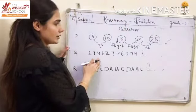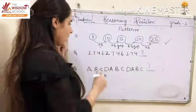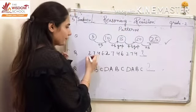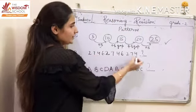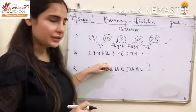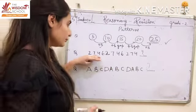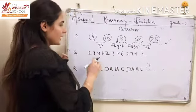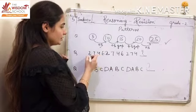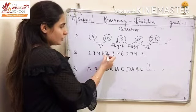In this type of question, children, in patterns in numbers, you will see there is a series given. You will check here — series: 2, 7, 4, 6.